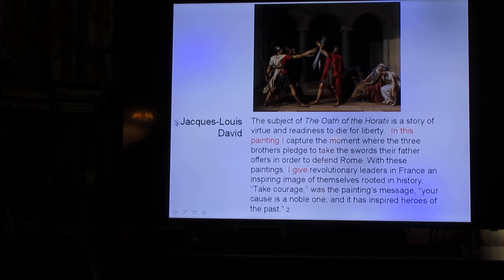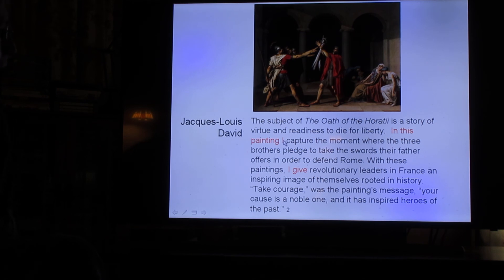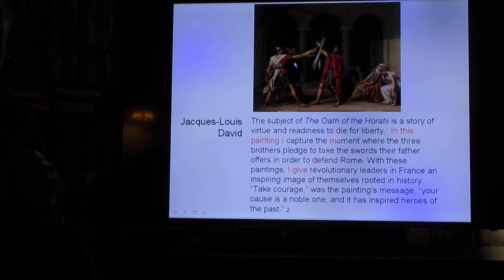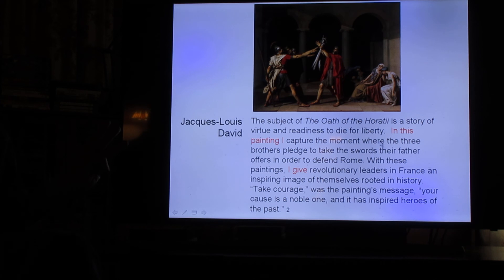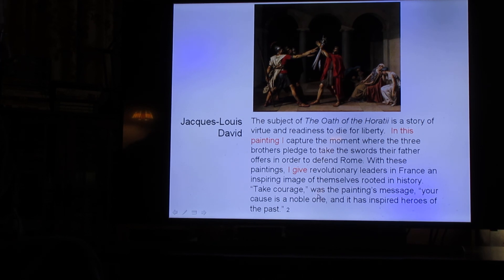Here's the picture — Jacques-Louis David. The subject of the painting is a story of virtue and readiness to die for liberty. In this painting I captured — so what I'm doing right here in this example is talking about a piece of art. You have to talk about three pieces of art, and I'm using the paperwork straight out of the book, changing all the sentences so it's in first person. 'I give revolutionary leaders in France inspiring images.' And there's footnote number two, which is on page 361.